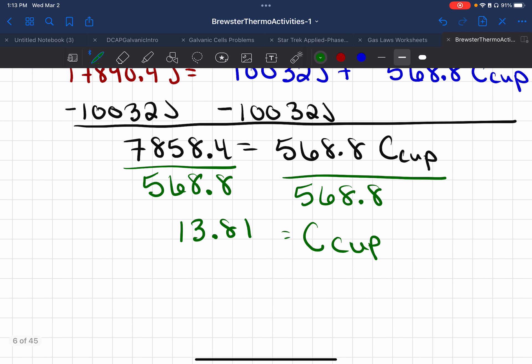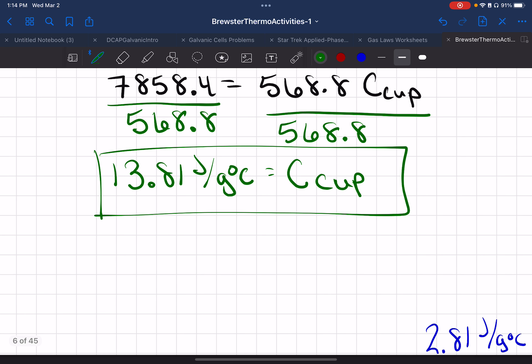And so for this group, I've calculated 13.81, which seems a little on the high side from their data. Okay, because generally your cups are going to have a low specific heat. 13.8 is a little bit on the high side, okay?